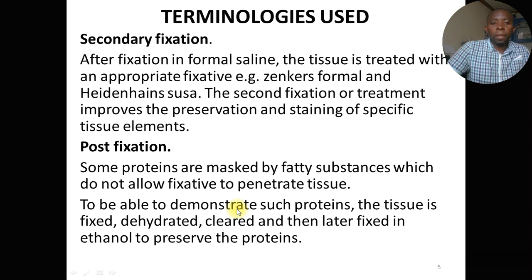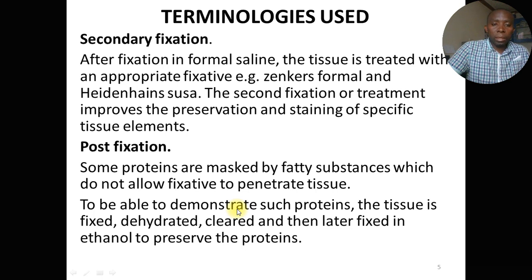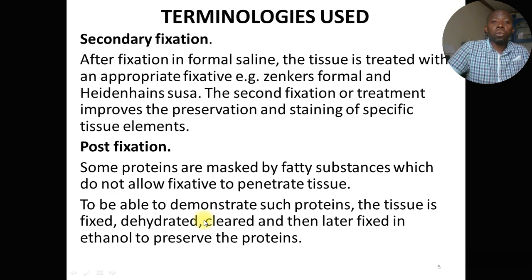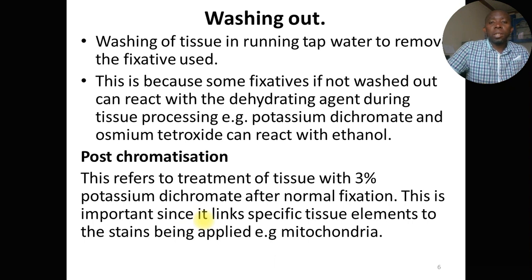Positive fixation is where some proteins are masked by fatty substances which do not allow the fixative to penetrate properly. If a tissue is not properly fixed, it will not stain well. To demonstrate such proteins, the tissue is fixed, dehydrated, cleared, and then fixed in ethanol to preserve the proteins of interest. Ethanol is a fixative that preserves tissue by causing coagulation of proteins, preventing them from being dissolved away.